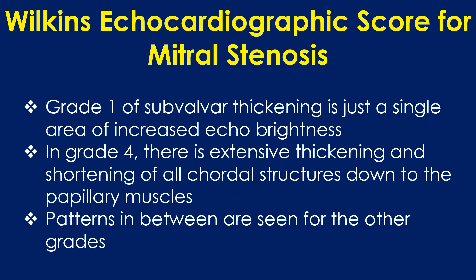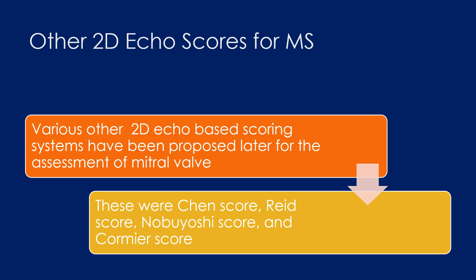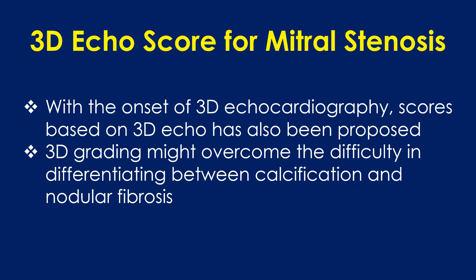Grade 1 for subvalvar thickening shows just a single area of increased echo brightness. In grade 4, there is extensive thickening and shortening of all chordal structures down to the papillary muscles. Various other 2D echo-based scoring systems have been proposed, including the Chen score, Reed score, Nobuyoshi score, and Kamiya score. With the onset of 3D echocardiography, scores based on 3D echo have also been proposed. 3D grading might overcome the difficulty in differentiating between calcification and nodular fibrosis.